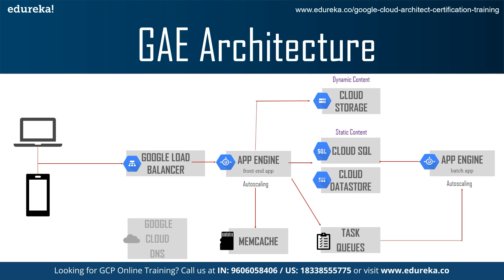Now let's see the architecture of Google App Engine. The main services include Google Load Balancer, which manages load balancing of applications; the front-end app, responsible for redirecting requests to appropriate services; Memcache, a cache memory shared between instances providing high-speed information availability; and task queues, a mechanism that redirects long tasks to backend servers keeping front-end servers free for new requests. Google App Engine also has static and dynamic storage solutions — cloud storage for static files, and Cloud SQL and Cloud Datastore for relational and NoSQL dynamic storage.